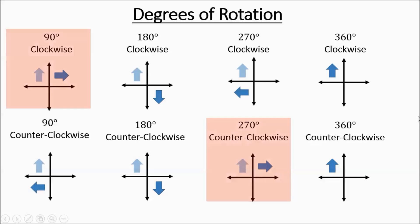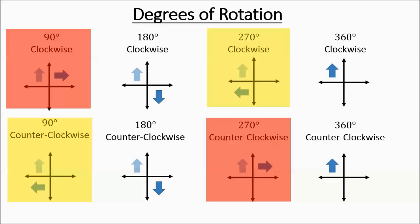If you notice, a 90 degree clockwise is the exact same thing as a 270 counterclockwise. And 270 clockwise is the same thing as 90 counterclockwise. Also, 180 degrees — doesn't matter clockwise or counterclockwise — you're going to end up in the same spot. Same thing as 360 degrees; you're going to end up in the same spot no matter which way you spin it.